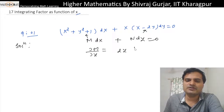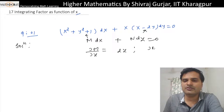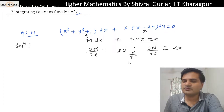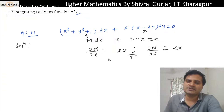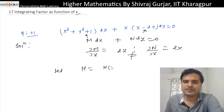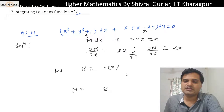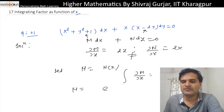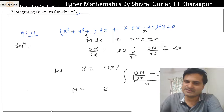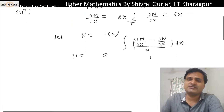Del(M)/del(y) is 2y and del(N)/del(x) is 2x, which are of course not equal. So this is a non-exact differential equation. Now let mu be a function of x only. We compute mu using the formula: mu equals e to the power of integral of (del(M)/del(y) minus del(N)/del(x)) divided by N, integrated with respect to x. This is what we have just derived.